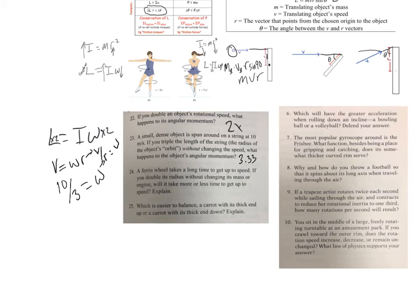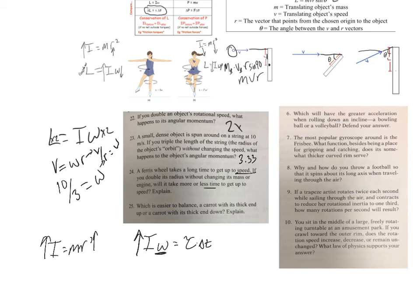A ferris wheel takes a long time to get up to speed. If you double its radius without changing its mass or its engine, will it take more or less time to get up to speed? Since we have time involved, we use I omega equals torque times delta T. Doubling the radius raises the moment of inertia I. We want to reach the same omega, and since we're not changing the engine, torque stays the same. If I is increasing, omega stays the same, and torque stays the same, then delta T — the time — has to increase. So it will take more time to get the ferris wheel spinning.